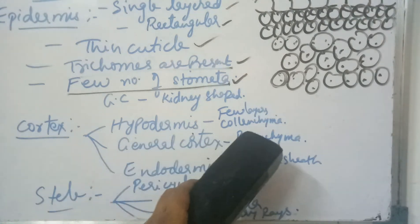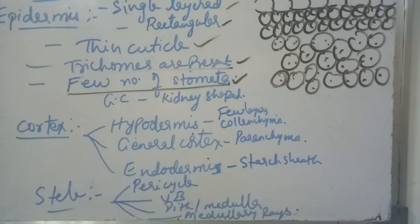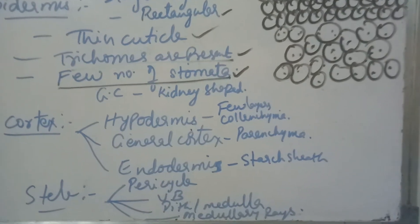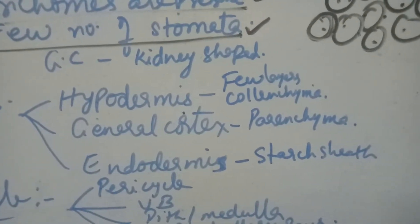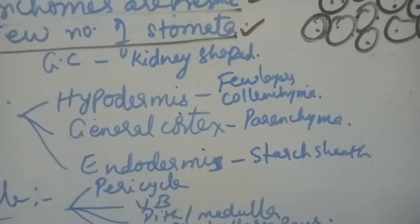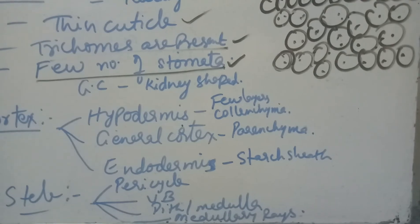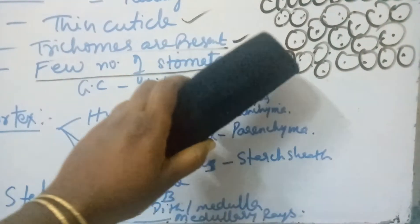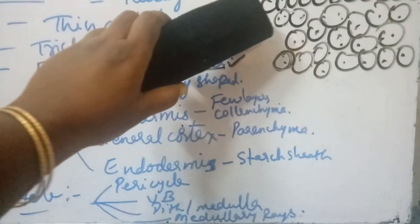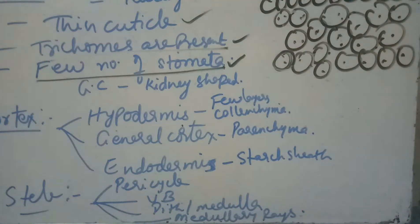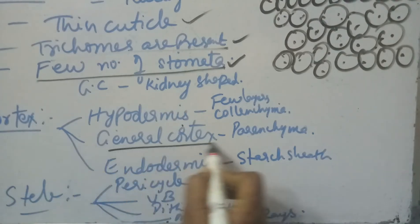In dicot stems, the general cortex is made up of loosely arranged parenchyma cells. The upper layers have chloroplasts and help in synthesis of food materials; the lower layers have leucoplasts and help in storage of food materials.